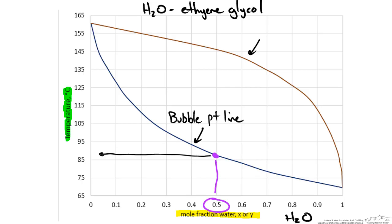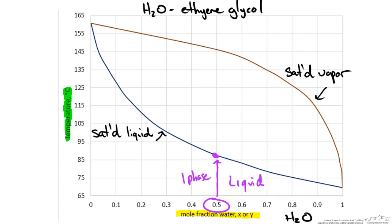The opposite line is called the dew point line, since going from a vapor downwards as we decrease temperature will form our first liquid droplet. So these are also known as the saturated liquid line and the saturated vapor line. Anytime we are between these two lines we have both vapor and liquid at equilibrium and we call this VLE.